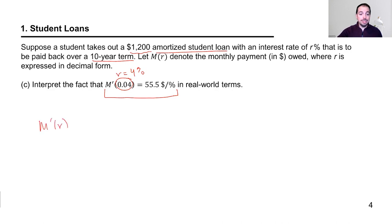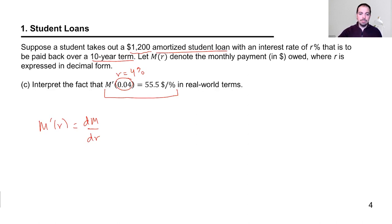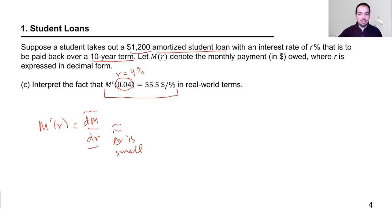I'll go back to Leibniz notation to help interpret this — and there are many ways to do this. When the change in R is small, dM is the infinitesimal change in M and dR is the infinitesimal change in R — as tiny as you can imagine, but not zero changes.